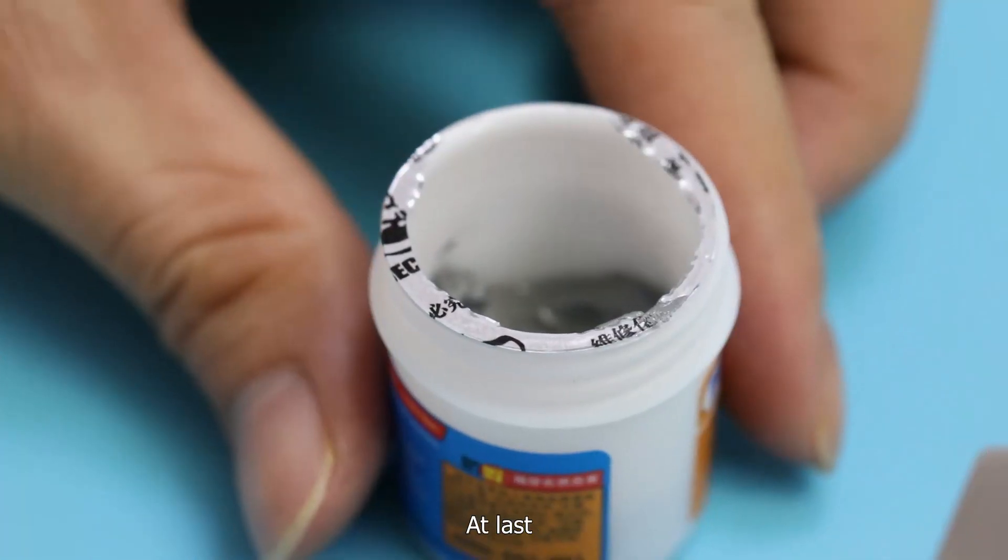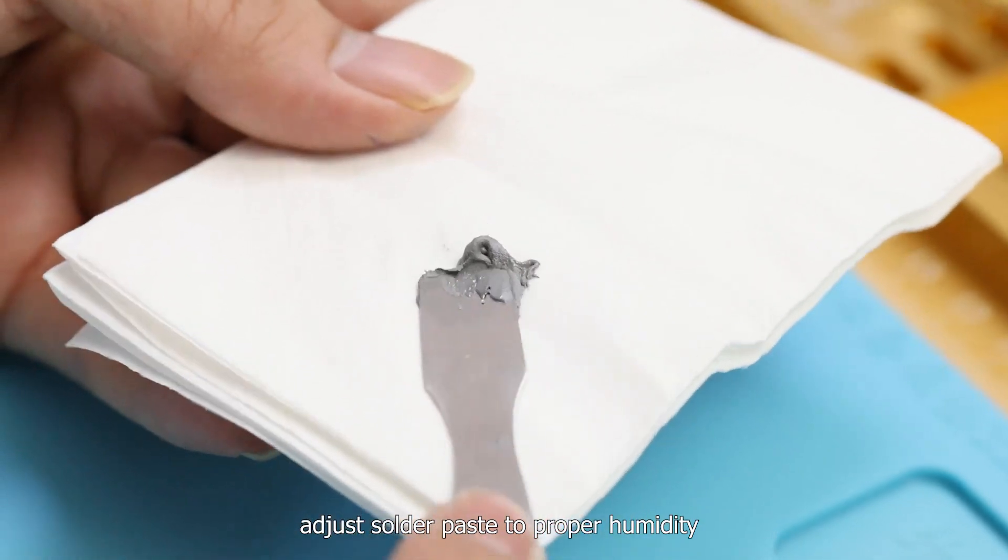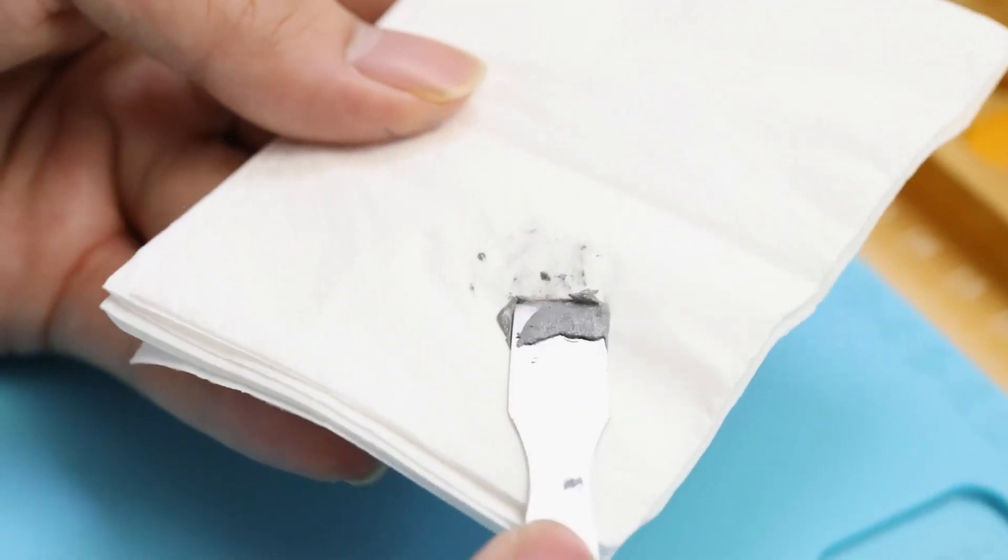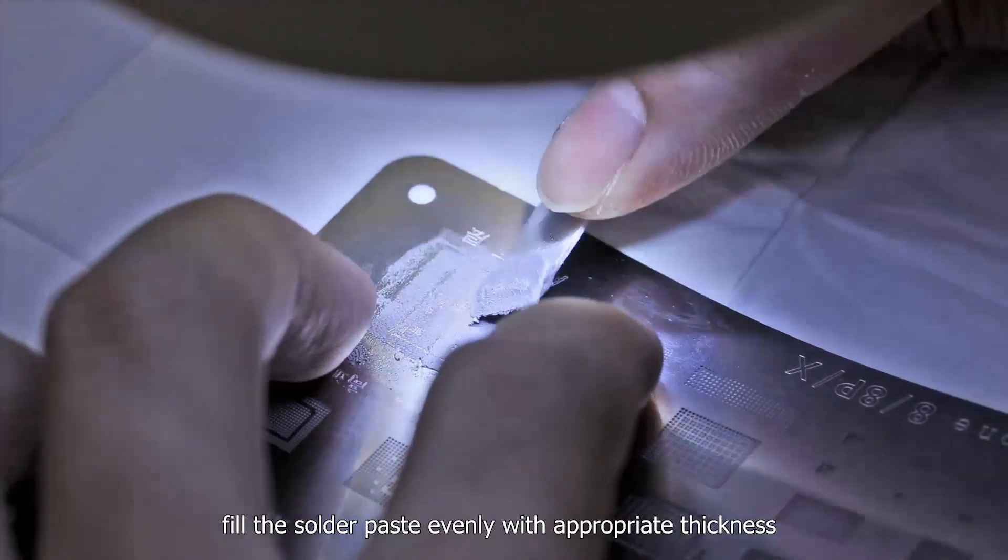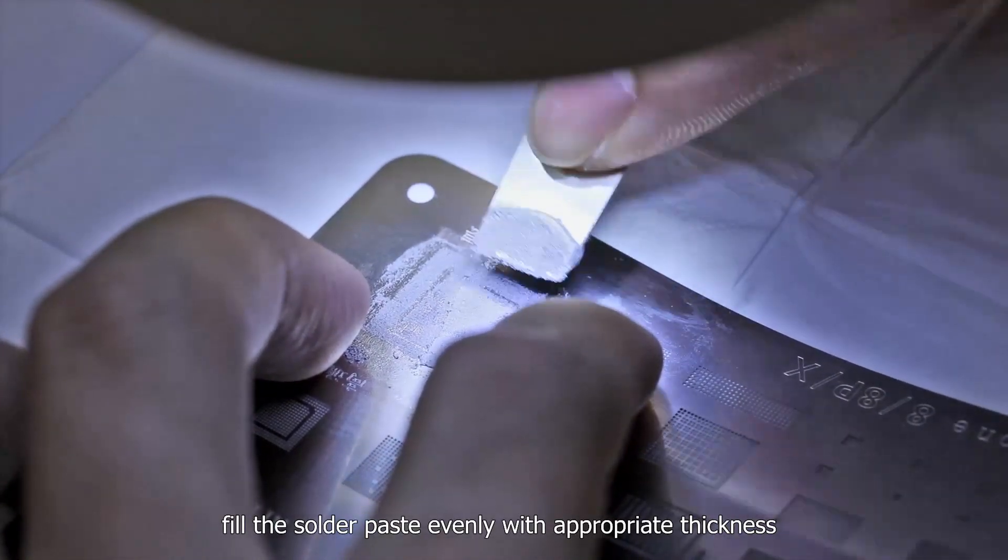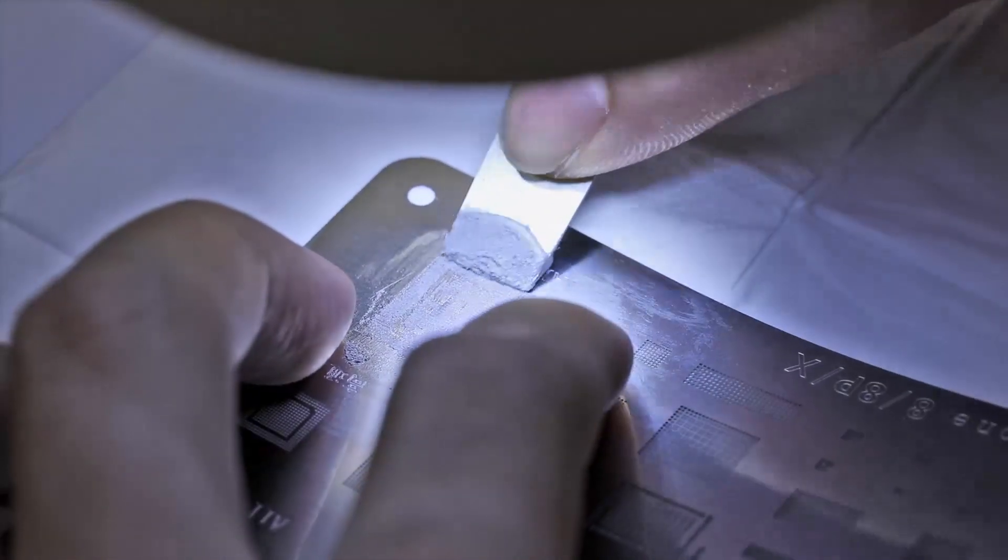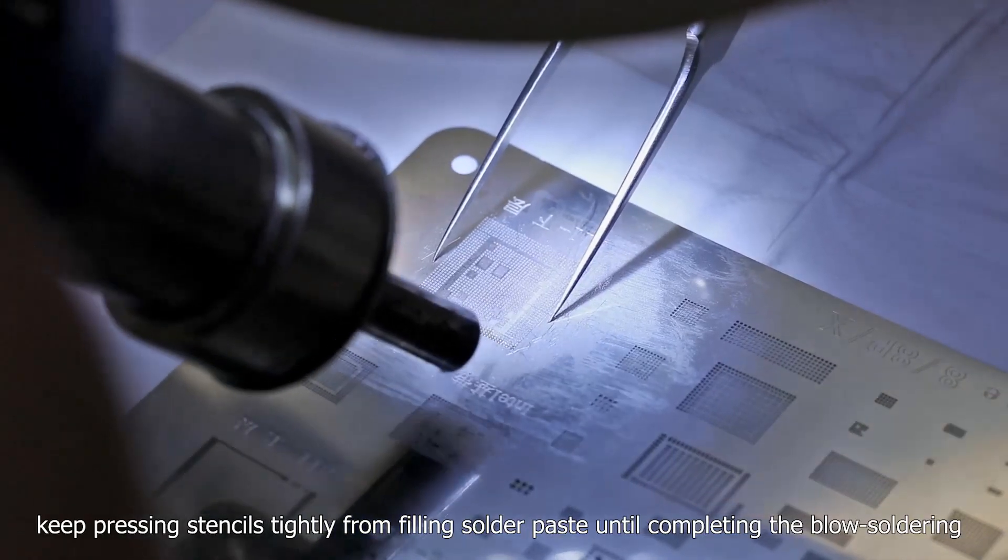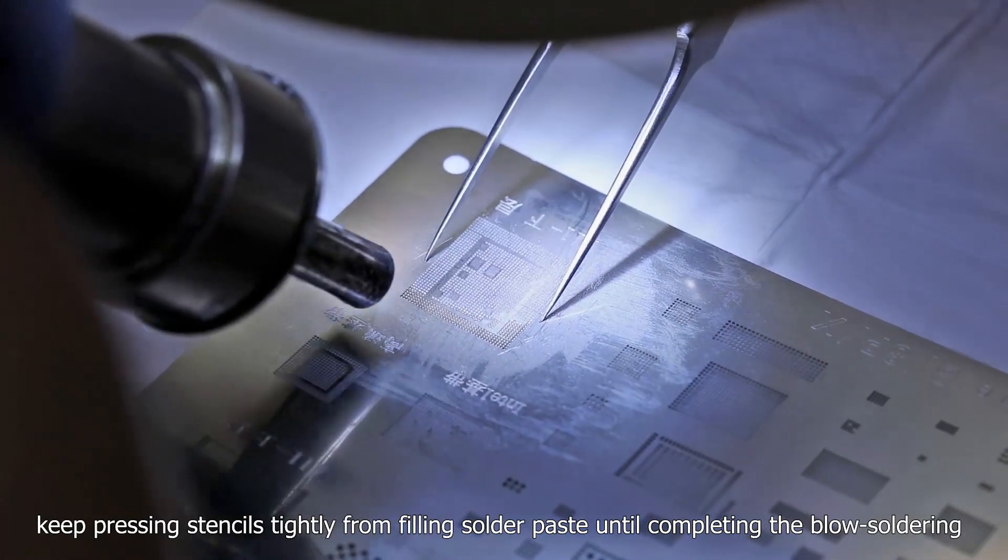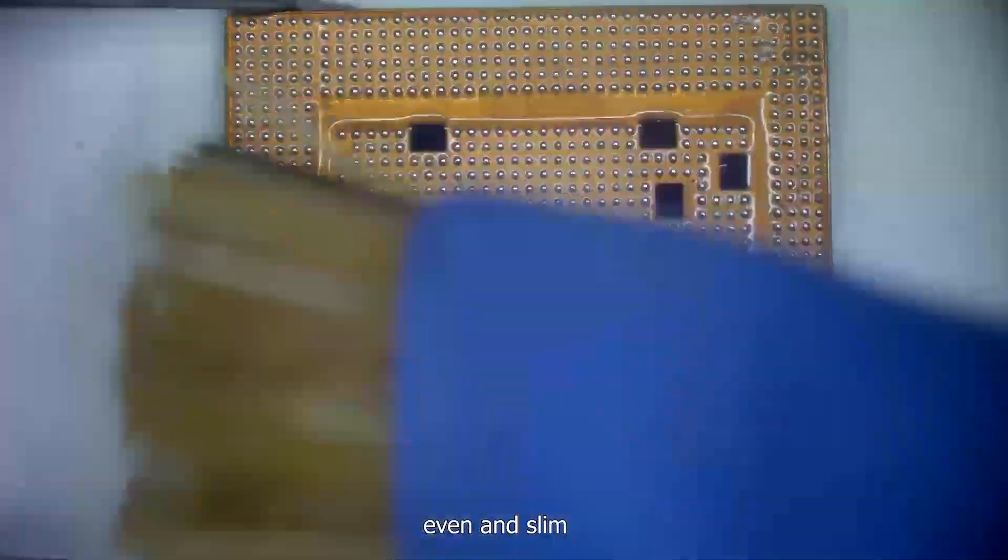At last, here are tips on BGA reballing that we must pay attention to. First, adjust the solder paste to proper humidity. Second, fill the solder paste evenly with the appropriate thickness. Third, keep pressing stencils tightly from filling solder paste until completing the blow soldering. Then the tin balls will be complete, even, and slim.